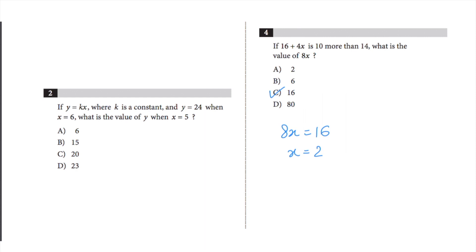So, 16 plus 4x should equal 16 plus 8, which is 24. This is indeed 10 more than 14, because 10 plus 14 equals 24. Because these two answers match, I know with 100% certainty that my answer to this question is correct.